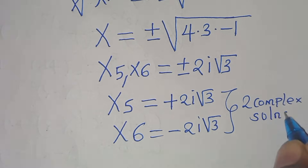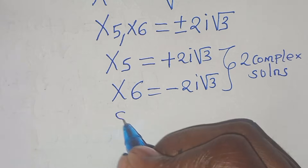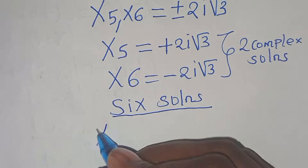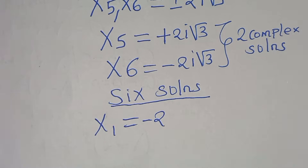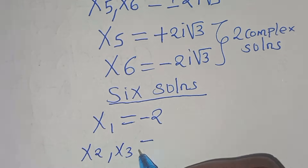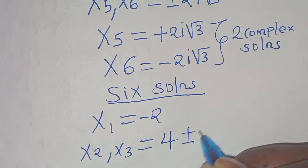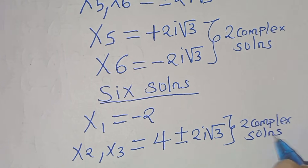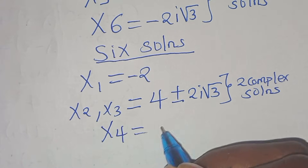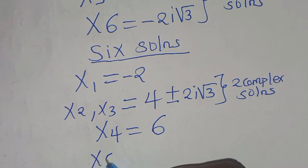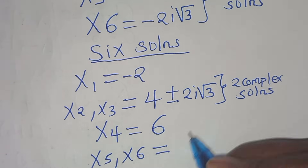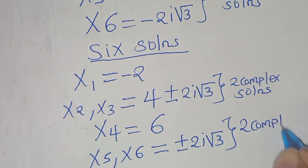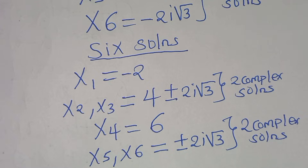This implies that we have six solutions to this math problem. We have x1 equal to minus 2. We have x2 and x3 equal to 4 plus or minus 2i square root of 3. And x5 and x6 equal to plus or minus 2i square root of 3. Together these give us 6 solutions.